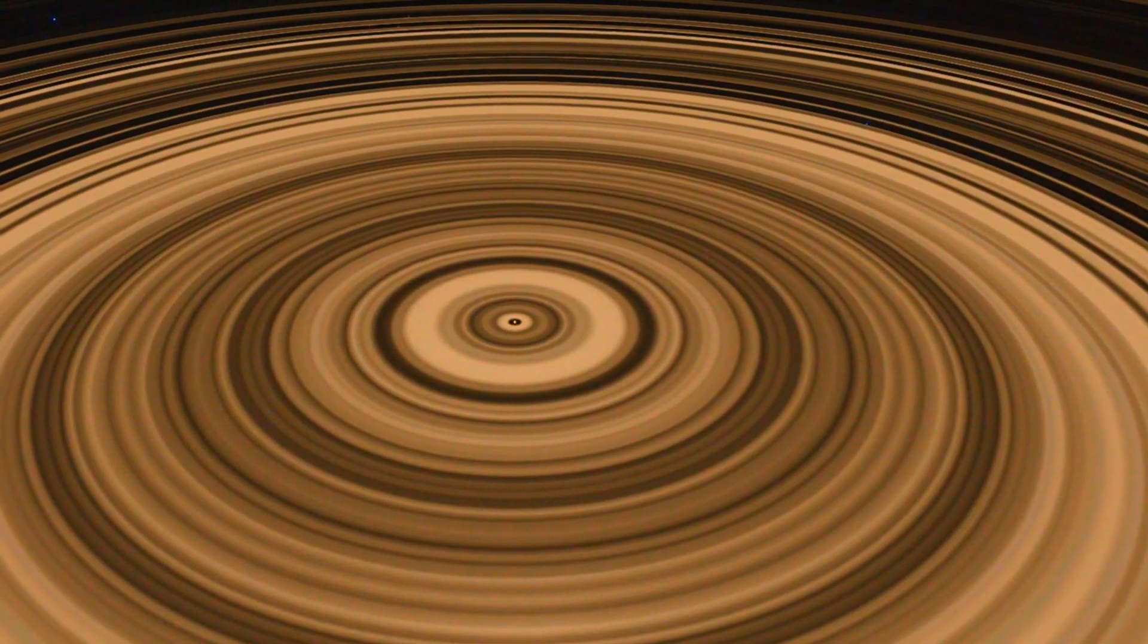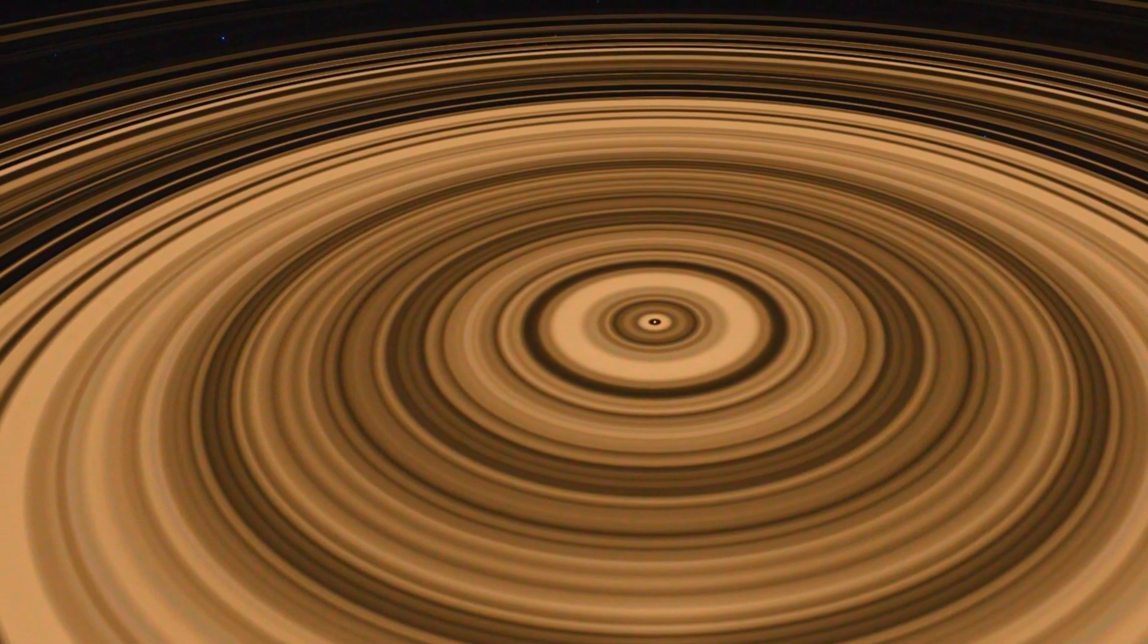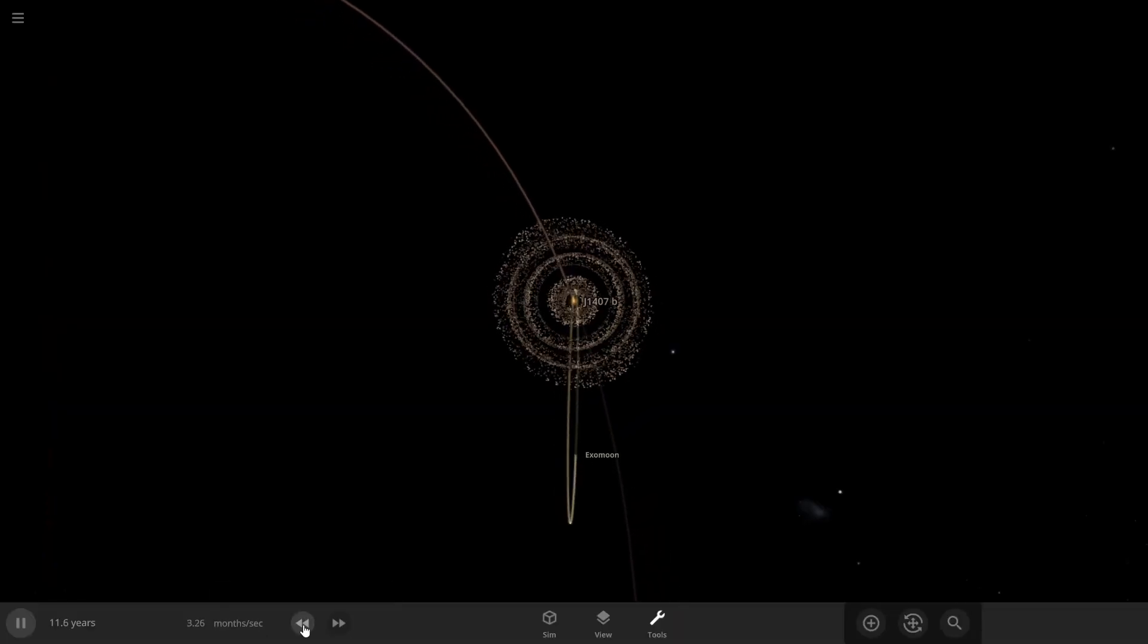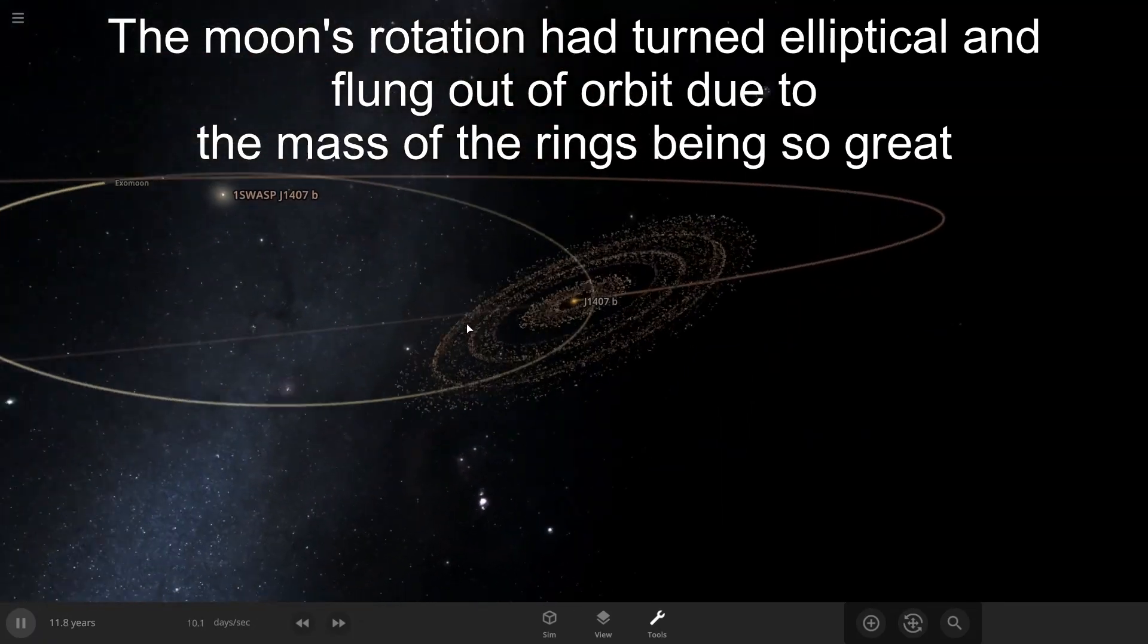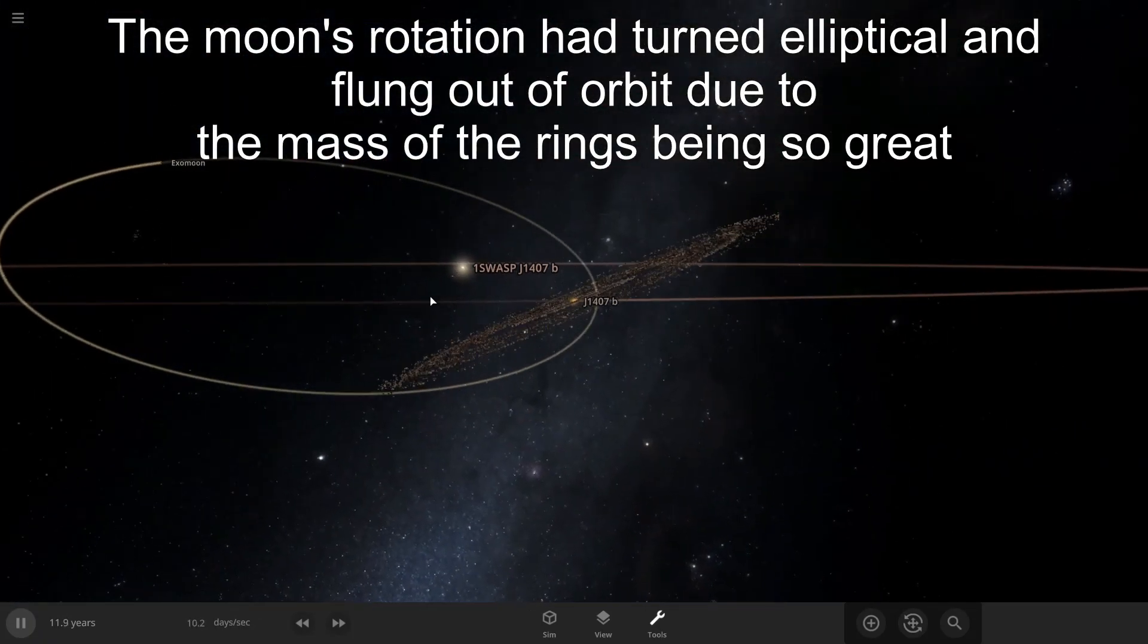The unknown is how does a ring system come to form a retrograde rotation like this? That is still a great question. Here I've attempted to build a simulation of what this would really look like.